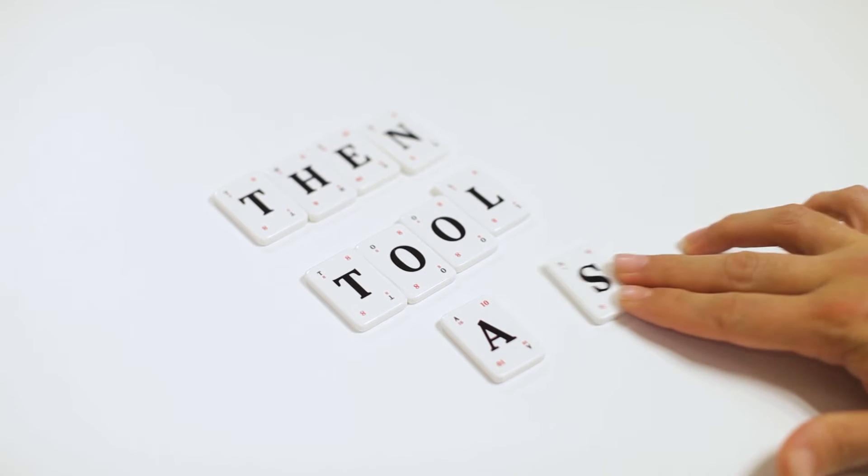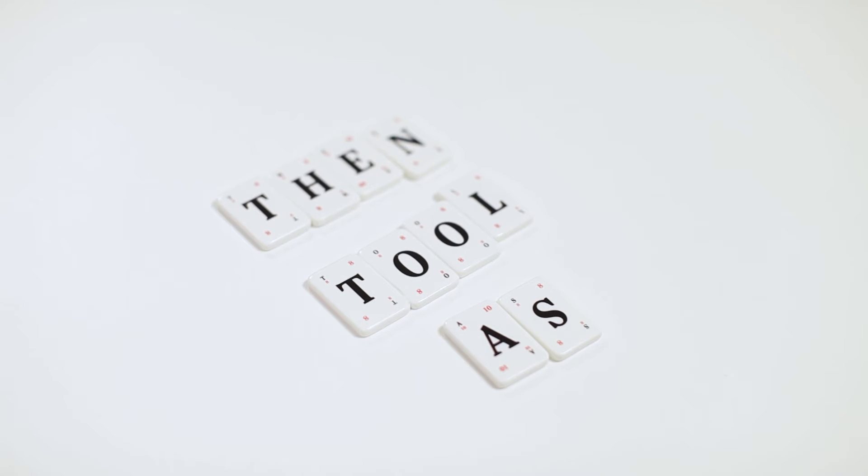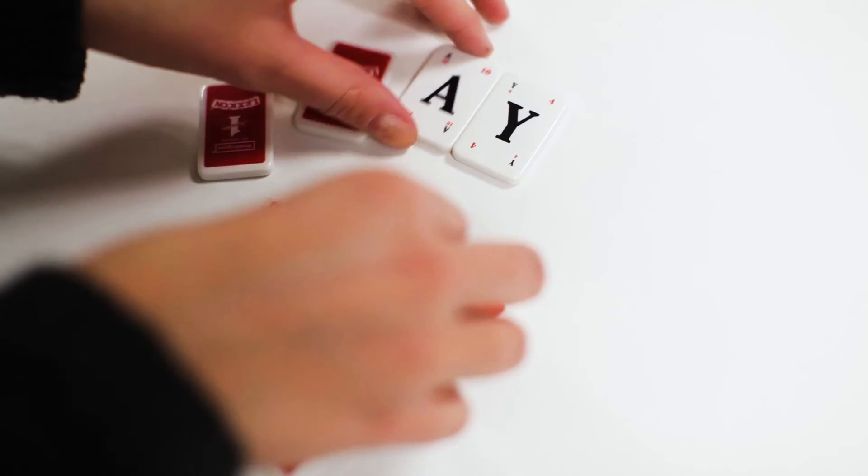When you've got rid of all your letter tiles, shout 'lexicon'. If all your words are correct, you take the round. If any of your words are incorrect, you're out of that round. If in doubt that a word is valid, use a dictionary or vote.